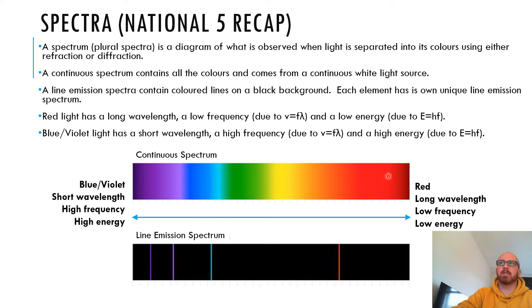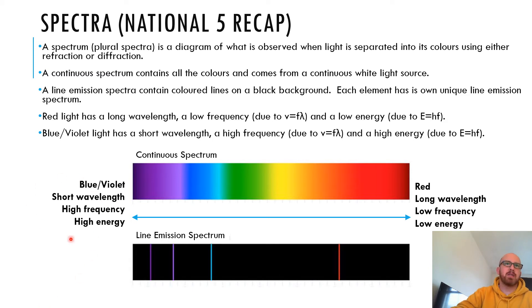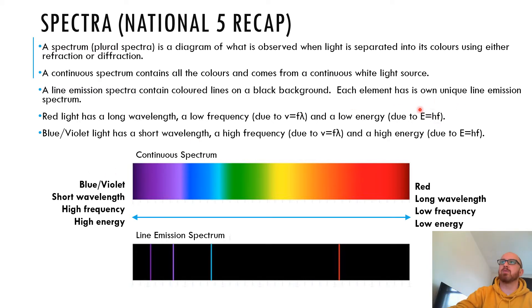A line emission spectrum contains coloured lines on a black background. Each element has its own unique line emission spectrum, like a light fingerprint. Here's the line emission spectrum for hydrogen — black background with coloured lines. This end of the spectrum is blue-violet light: short wavelength, high frequency, and because of E = HF, high energy. The red end has long wavelength, low frequency, and low energy.